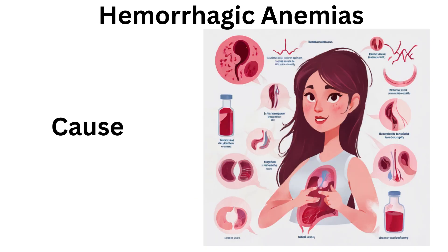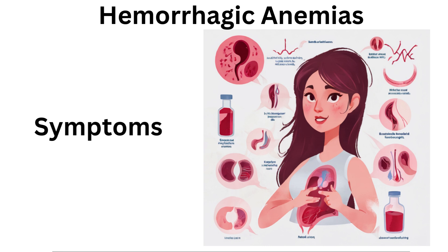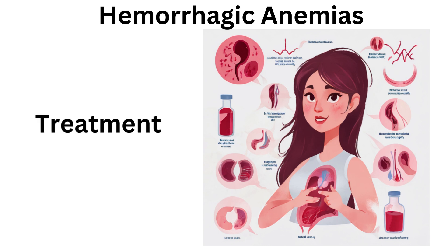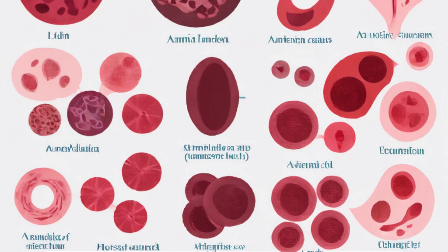Hemorrhagic anemia results from acute or chronic blood loss, either externally from injuries or internally, such as gastrointestinal bleeding or heavy menstrual periods. Symptoms include fatigue, weakness, pale skin, and signs of bleeding such as melena or hematuria. Treatment involves addressing the underlying cause of bleeding and, if necessary, blood transfusions.